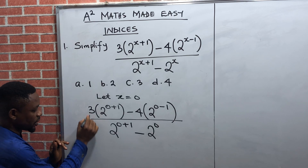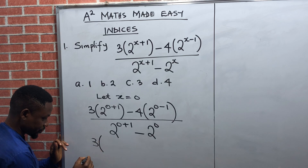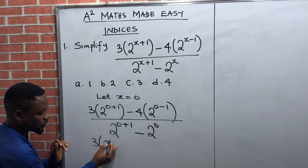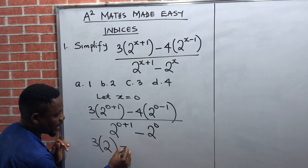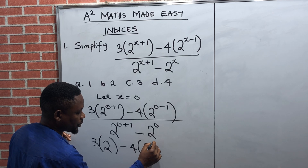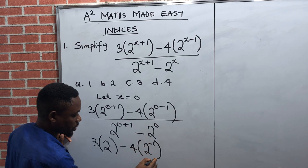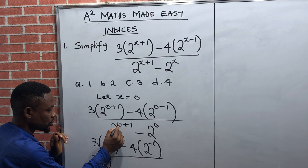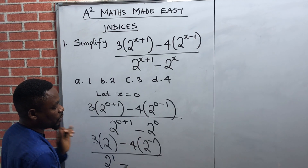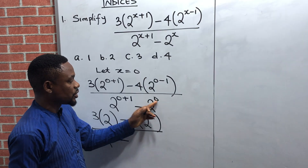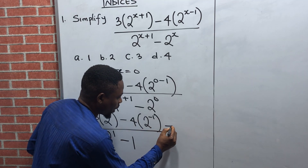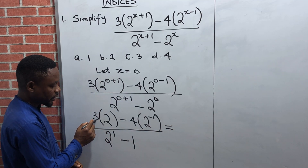Now the next thing is to simplify. We have three brackets, and the power is zero plus one, which is one, so this is two raised to power one, which is two. Then minus four, open bracket, and the power is zero minus one, which is minus one, so this is two raised to power minus one. Then all over: two raised to power zero plus one, which is one, then minus. And by the laws of indices, anything raised to power zero is always one, so two raised to power zero gives us one.